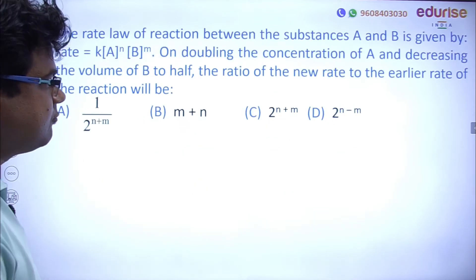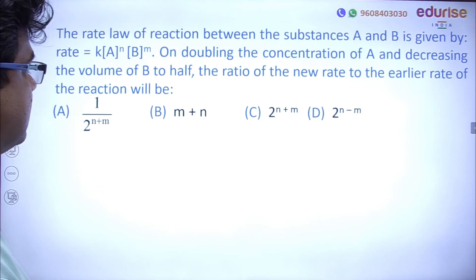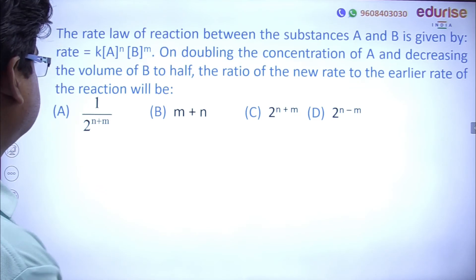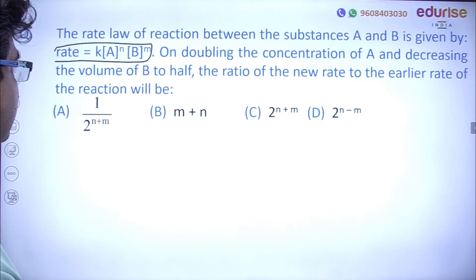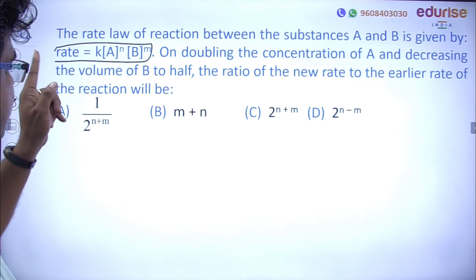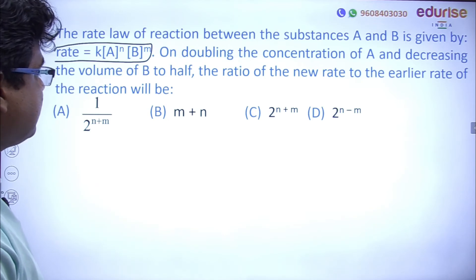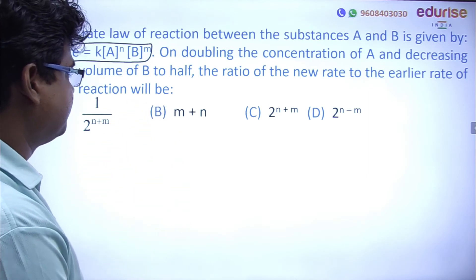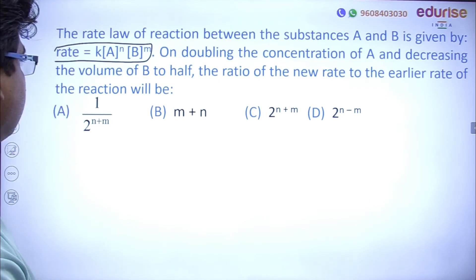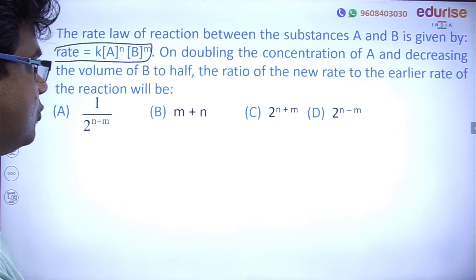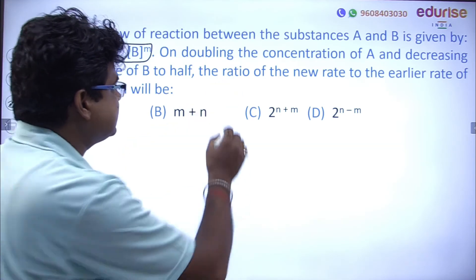Next, one of the best questions. The rate law expression between substances A and B is: rate = k[A]^N [B]^M, where N is the order with respect to A and M is the order with respect to B, and overall order is N + M. Now the condition: on doubling the concentration of A and decreasing the volume of B to half, what is the ratio of new rate to earlier rate?